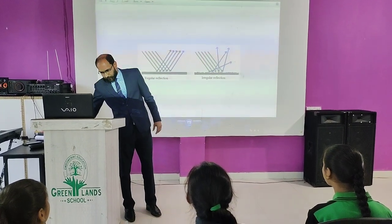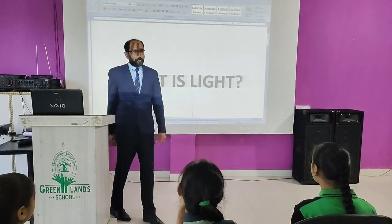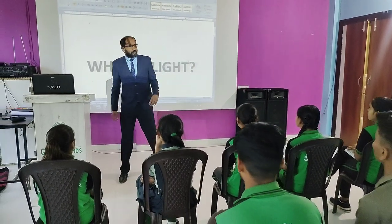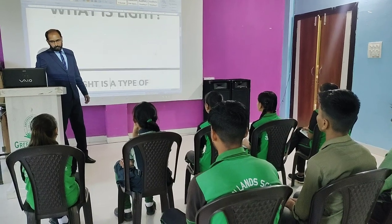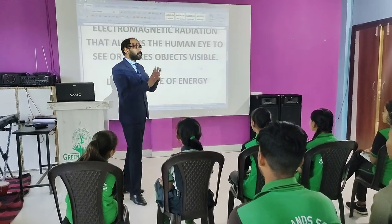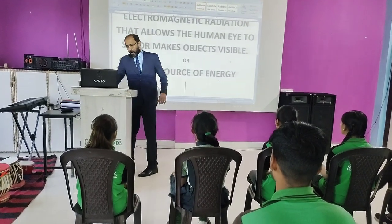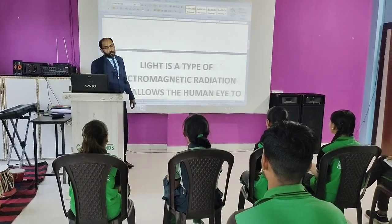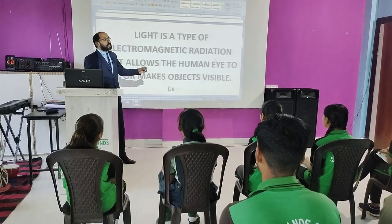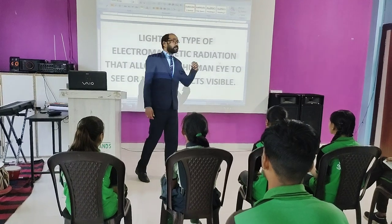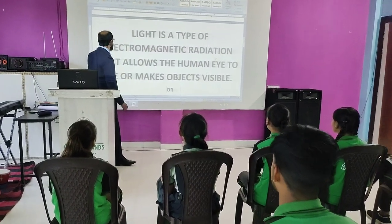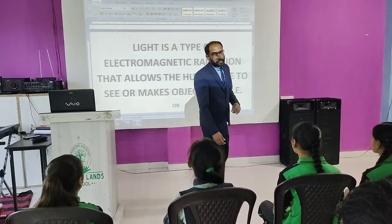What is made by light? What is the definition of light? In simple words, we can say that light is a source of energy. Otherwise, we can say that light is a type of electromagnetic radiation that allows the human eye to see or makes objects visible. That is the definition of light.